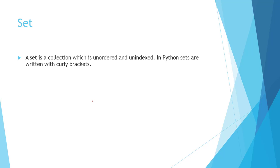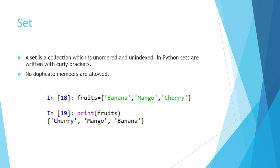First of all, we will introduce sets. A set is a collection data type in Python. It is a collection type which is unordered and unindexed. In Python, sets are written with curly braces and no duplicate members are allowed in the set. For example, set name is 'fruits', enclosed with curly braces, which contains banana, mango, and cherry — three elements in the set. After that, we have printed our set.